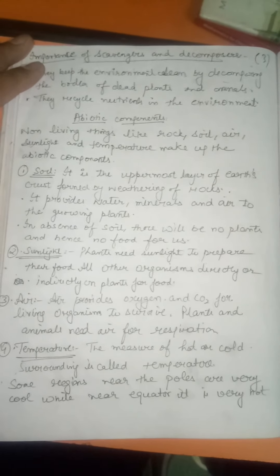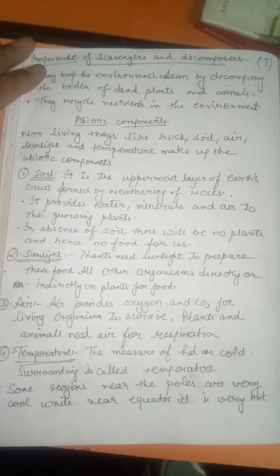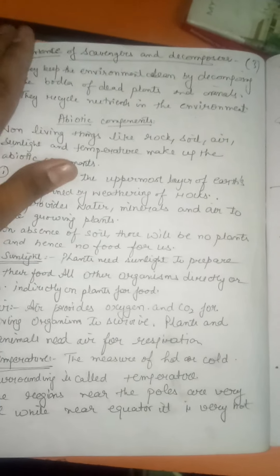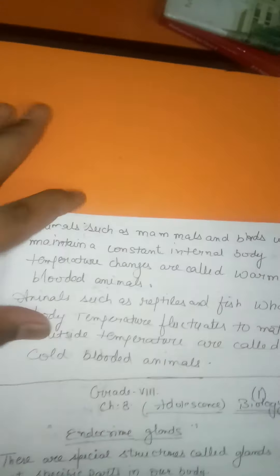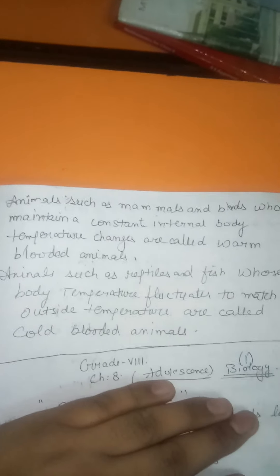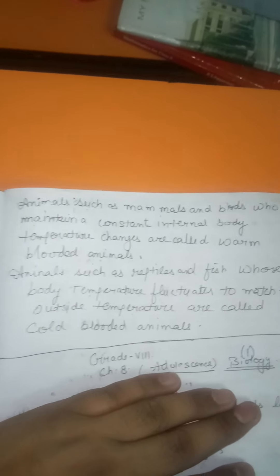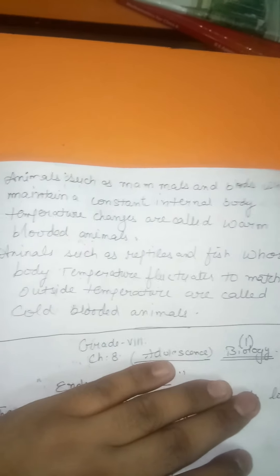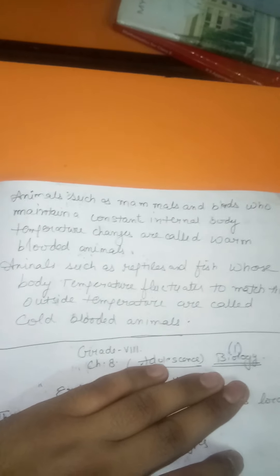In polar regions and at the North Pole, the temperature is low because the sun's rays fall at a slanting angle. That is why the temperature is lower in those areas. In equatorial areas, the temperature is higher and warmer because the sun's rays fall directly on that region.